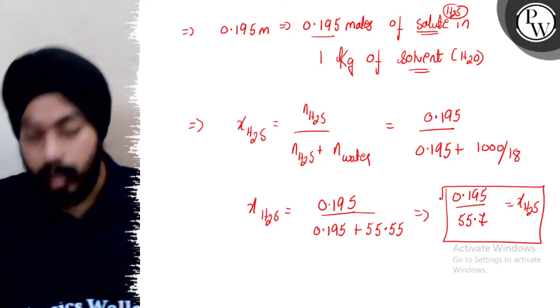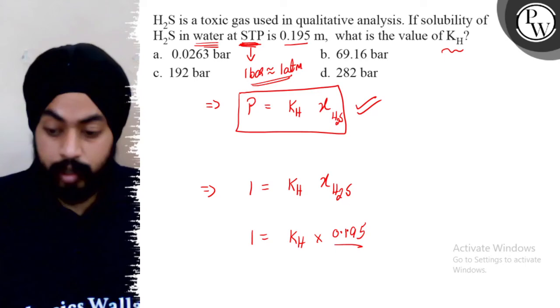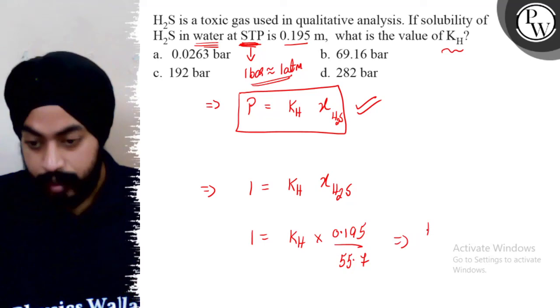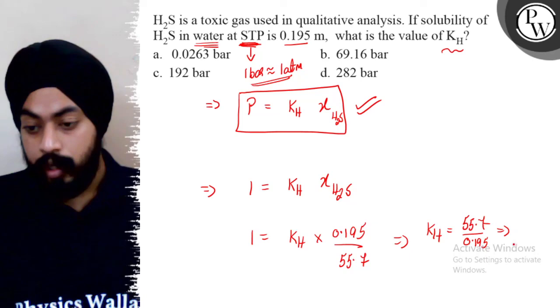Yeah, okay, let's put it here. 1 equals KH into mole fraction 0.195 upon 55.7. Okay, 55.7 approximately. I can tell you KH will be 55.7 over 0.195. So if you solve it, then our answer is 282 bar approximately.